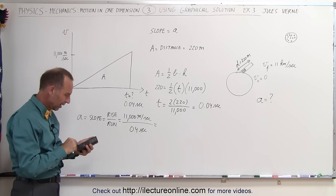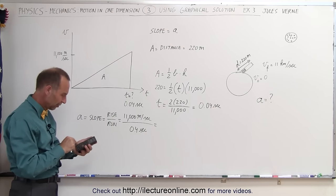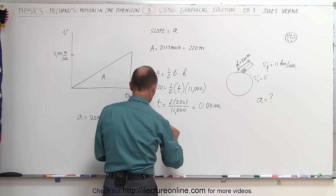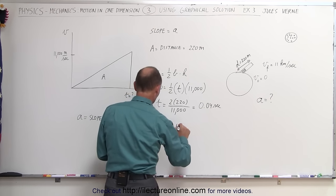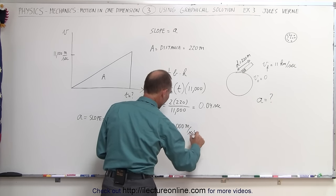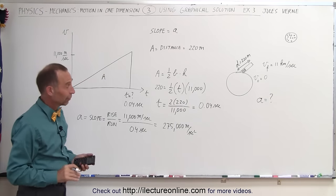We take 11,000 divided by 0.04, and we get an acceleration of 275,000 meters per second squared. That's a very high acceleration.